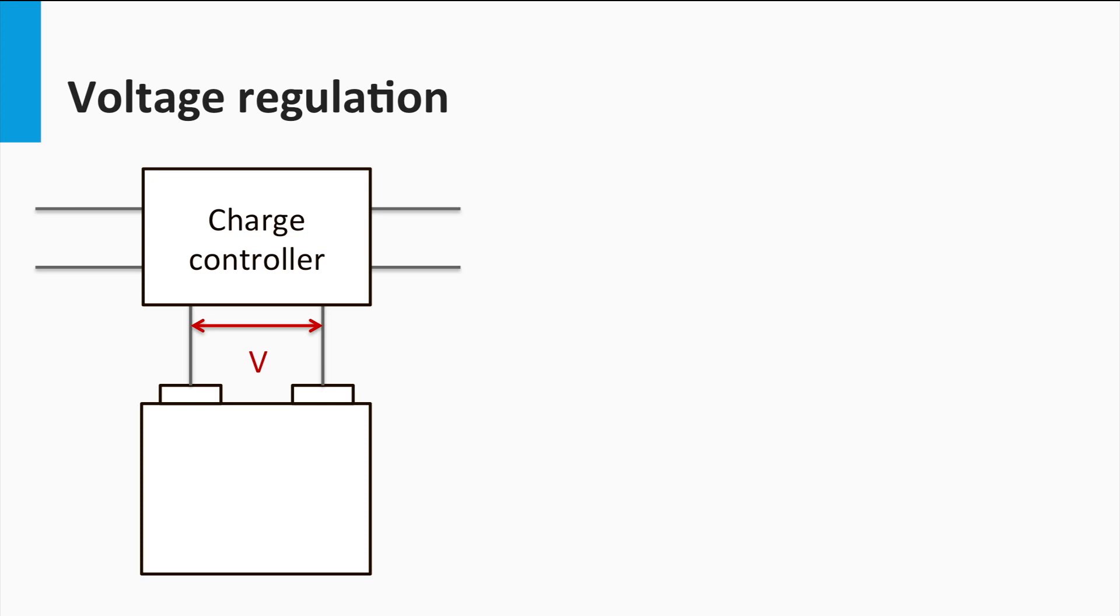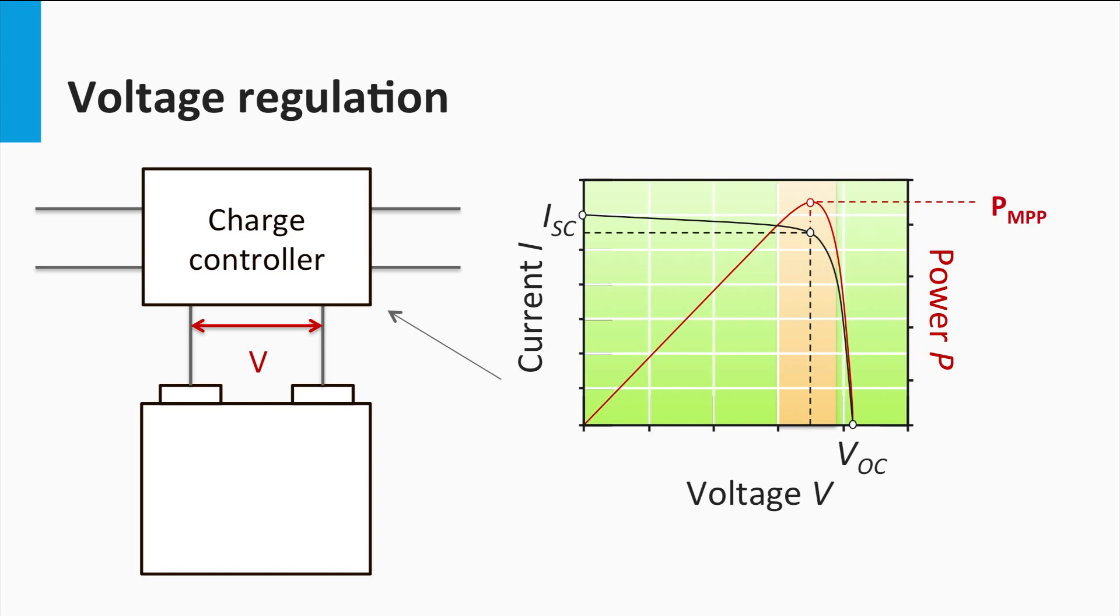Also, the PV array could have its maximum power point voltage at different levels based on the temperature and irradiance conditions. Therefore, the charge controller needs to do an appropriate voltage regulation to ensure the battery operates in the specified voltage range while the PV array functions at maximum power point. This means that the modern charge controller can, and often does, integrate a maximum power point tracker within its design.